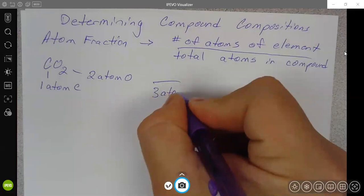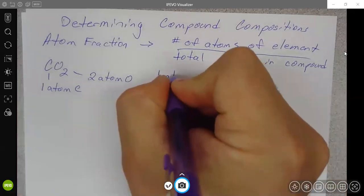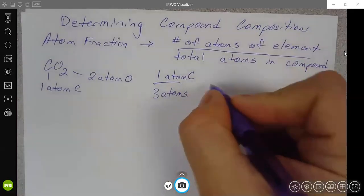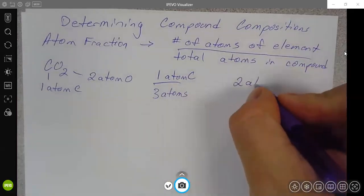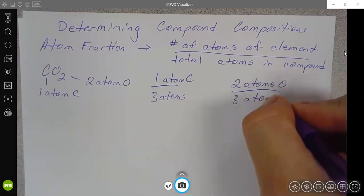So if you wanted the atom fraction of the carbon, then you would have one atom of carbon over the three. That would give you one third or two atoms of oxygen over three atoms in the compound.